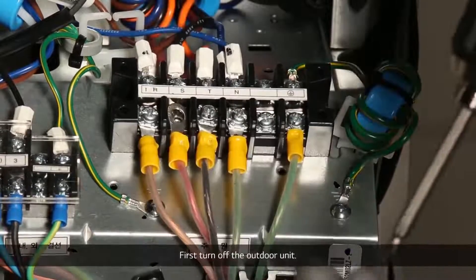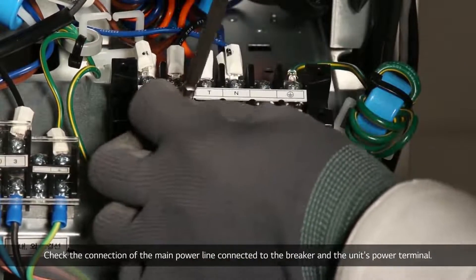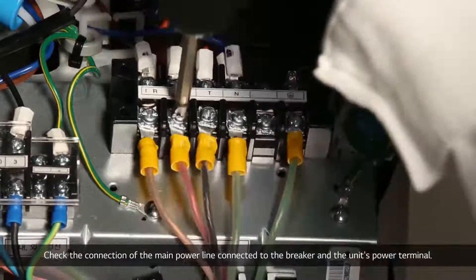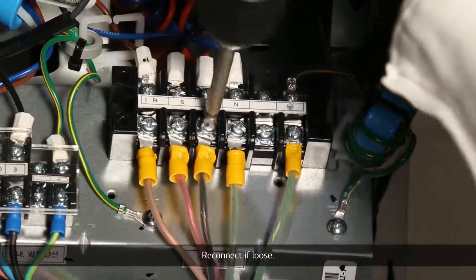First, turn off the outdoor unit. Check the connection of the main power line connected to the breaker and the unit's power terminal. Reconnect if loose.